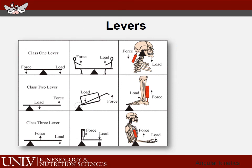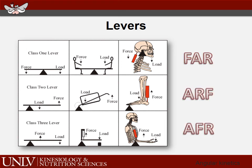Here's a summary table showing the relationship between the three lever classes — the general real-world concept and the major body example for each. A helpful mnemonic: FAR is class one (Fulcrum–Applied force–Resistance), ARF is class two, and AFR is class three. Fulcrum, applied force, resistive force — that's what ARF, FAR, and AFR stand for. Thank you.